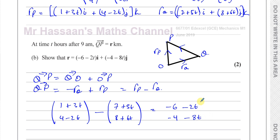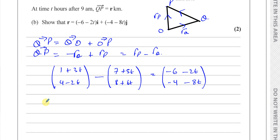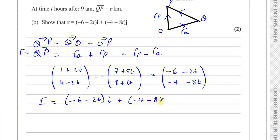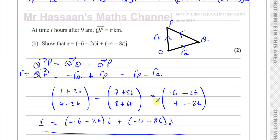So R, the vector from Q to P, in terms of i and j is (−6 − 2T)i + (−4 − 8T)j — just as we were asked to show. That's the answer to part B.